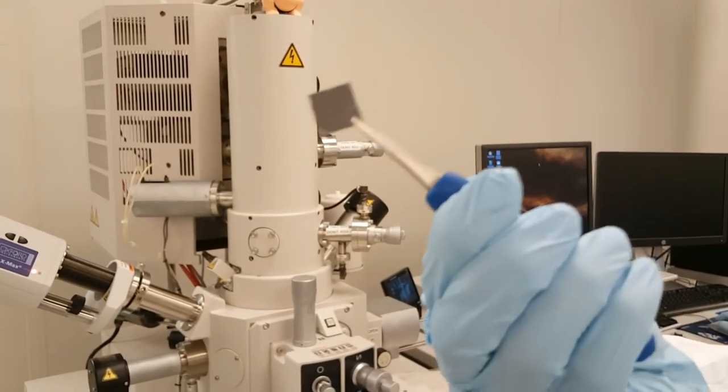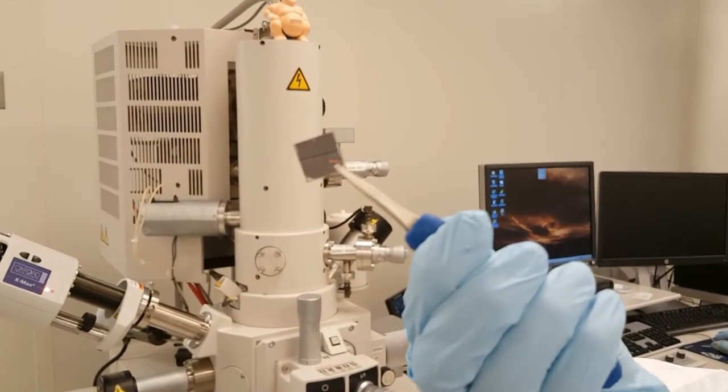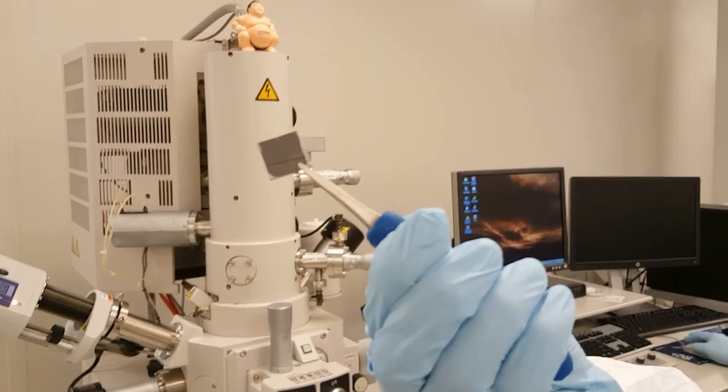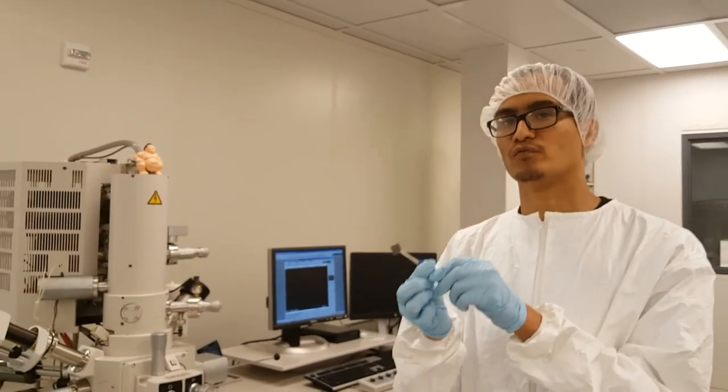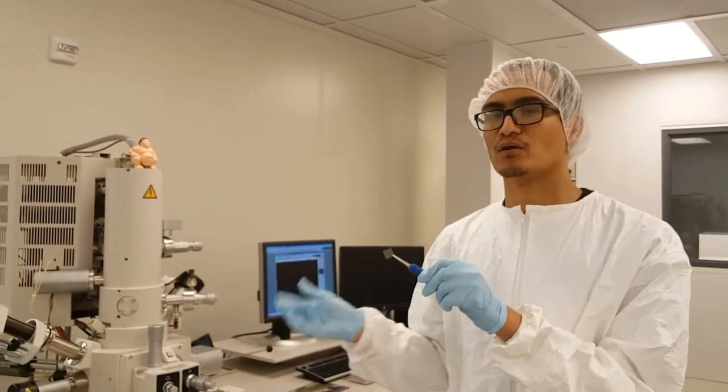So here we have a thin solid film of a light absorbing material called perovskite prepared by the spin coating process in our lab, and today we're going to show you the surface of this sample by the scanning electron microscope.